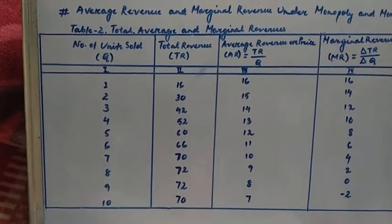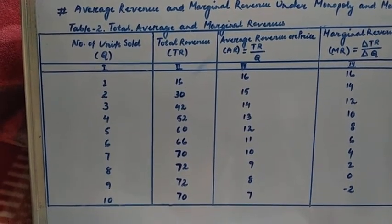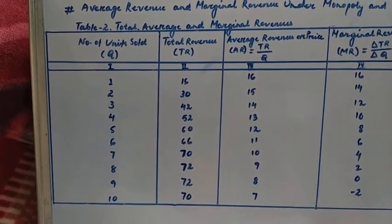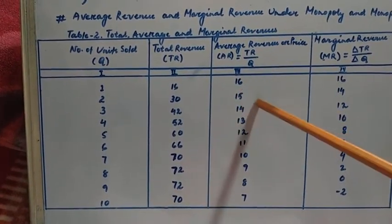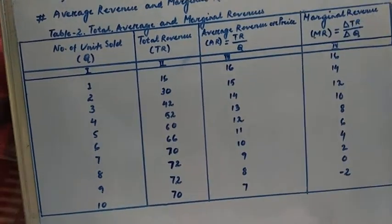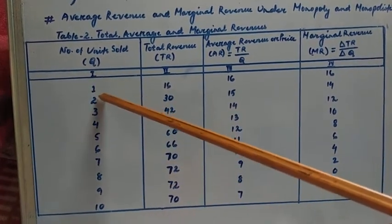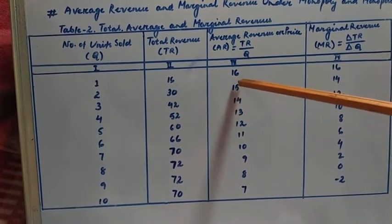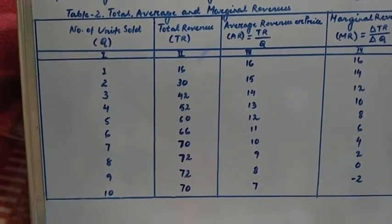Under imperfect competition — oligopoly, monopoly, and monopolistic competition — the demand curve facing an individual firm slopes downward. It is a downward sloping demand curve. From column three of the table, as the number of units sold increases from one to ten, the average revenue or price declines from 16, 15, 14, 13, down to seven rupees.